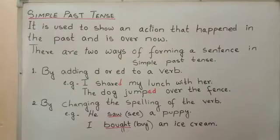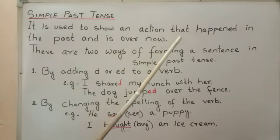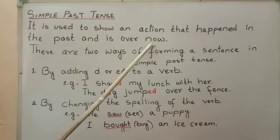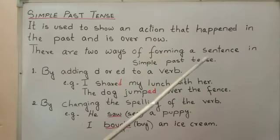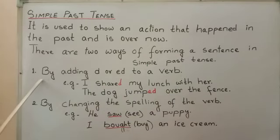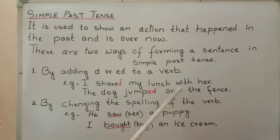Next, let us learn about simple past tense. Number one: by adding d or ed to a verb. For example, I shared my lunch with her. The dog jumped over the fence.